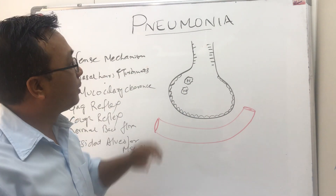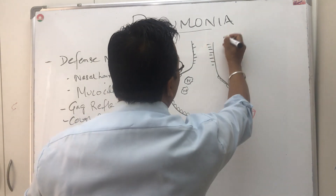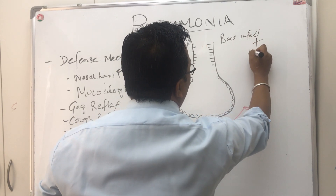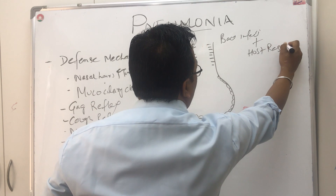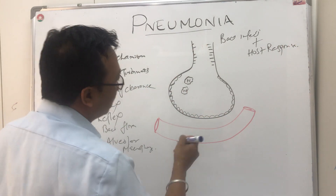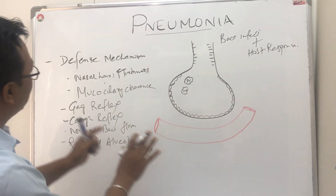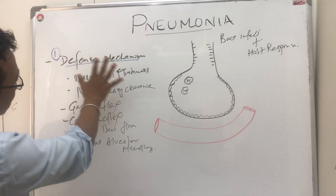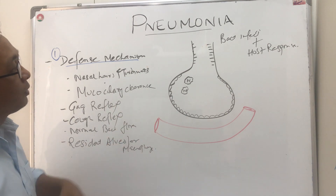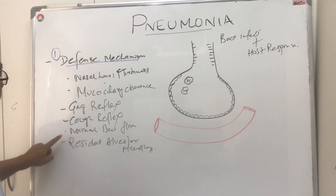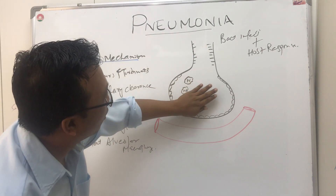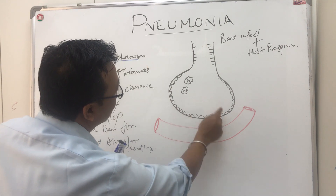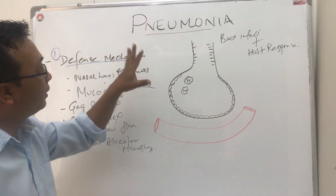Remember, pneumonia is not only because of bacterial infection — it is also because of the host response. So we can say this is because of bacterial infection and also host response. Once the bacteria is here, it releases lots of endotoxins. Any bacteria going inside has to overcome all six factors, and then it will be lodged in the lung parenchyma — the interstitial space and alveolar space, which is mainly inflamed in pneumonia.